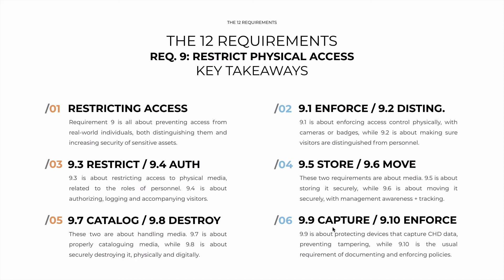The final two are 9.9 and 9.10. 9.9 is about specifically protecting devices that capture card data — preventing POS skimming and similar practices — both in terms of protecting the devices from attackers and training your own staff to identify tampering. While 9.10 is about documenting and enforcing these policies and procedures; all of these points must not be done informally but must be documented and enforced by staff. Requirement number 9 is all about protecting your physical data, with two clusters: one about physical locations and access control, and one about physical media — how to store it, transport it, and destroy it.